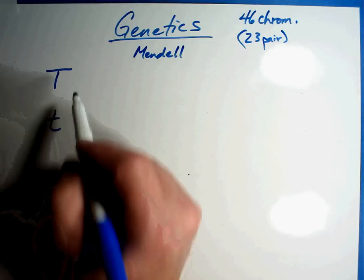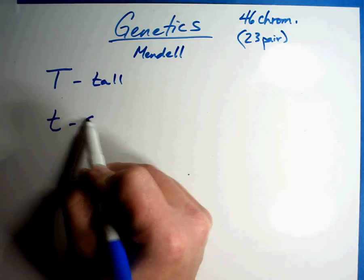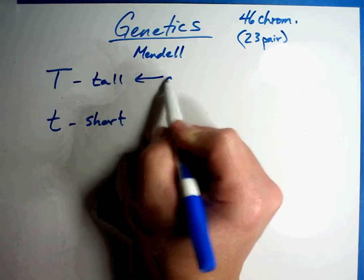Let's say, for example, a big T stands for a tall plant and a little t stands for a short plant. First, a couple of definitions. This is what is called the dominant gene.